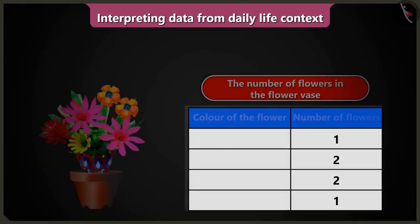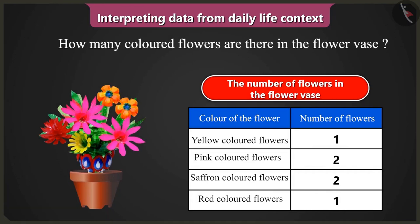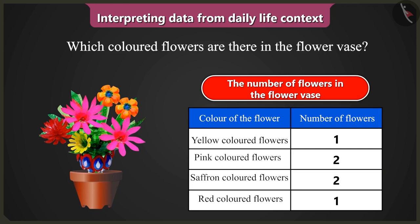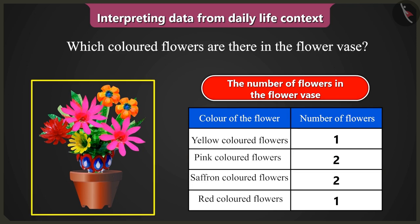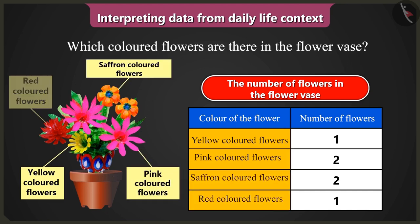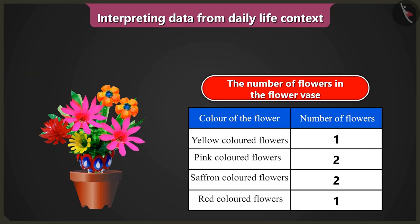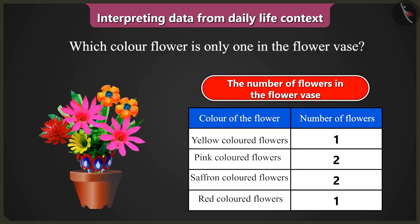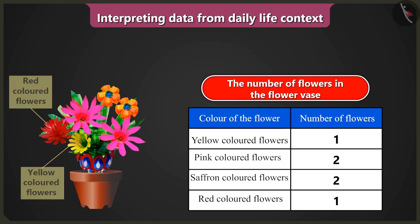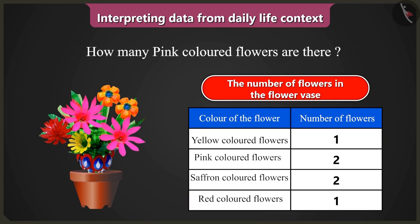So tell me, how many colored flowers are there in the flower vase? The table has data about flowers of four colors. Which colored flowers are there in the flower vase? There are yellow, pink, saffron and red colored flowers in the flower vase. Which color flower is only one in the flower vase? Yellow and red colored flowers are one each. How many pink colored flowers are there? There are two pink colored flowers.